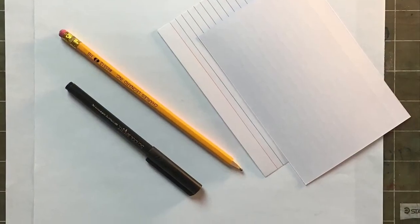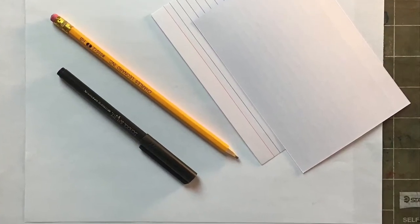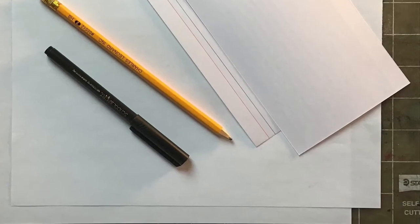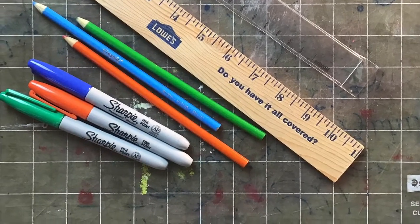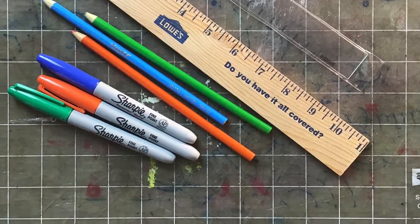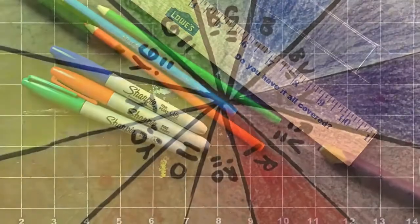For this activity you will need some paper, either printer paper or index cards, a pencil and a marker, and you'll also need something to color with. I'm showing markers and color pencils in this and a ruler of some sort or straight edge.